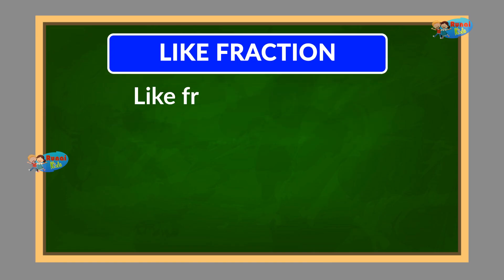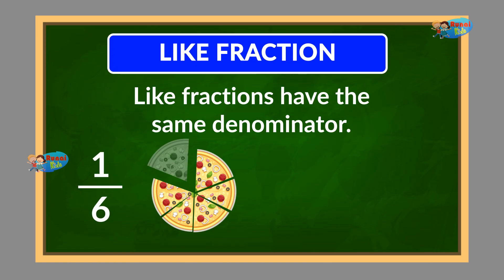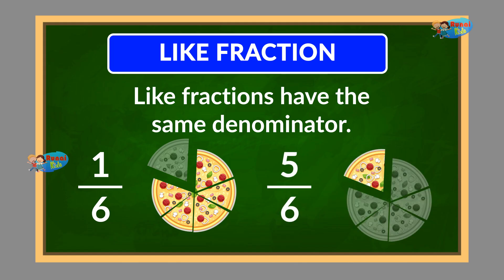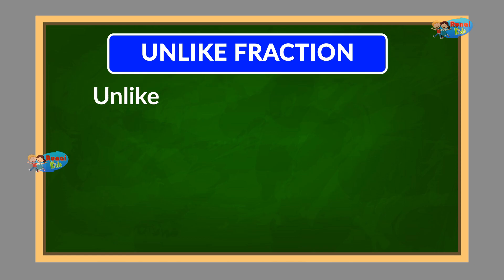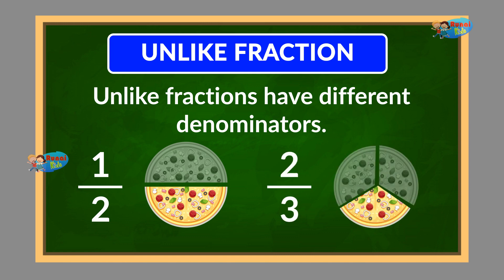Like fractions have the same denominator, such as 1 by 6 and 5 by 6. Unlike fractions have different denominators, like 1 by 2 and 2 by 3.